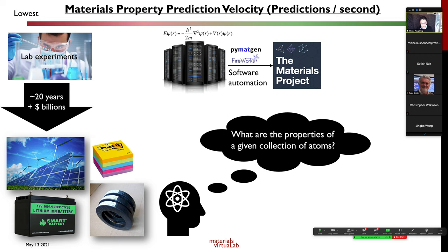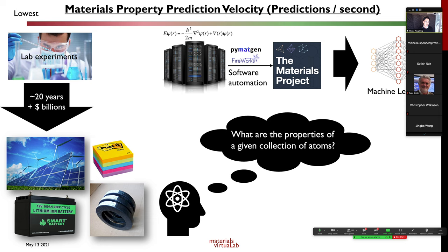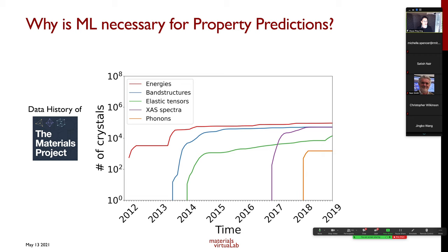Since Christine already covered the Materials Project in great detail, I want to talk about what's next — how do we get from the Materials Project and first-principles calculations to even faster predictions with a greater number per second? This is where machine learning comes in. The Materials Project started back in 2012, and since then the total number of computed properties has grown significantly.